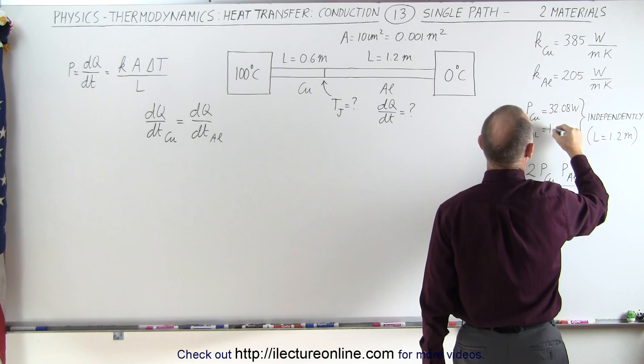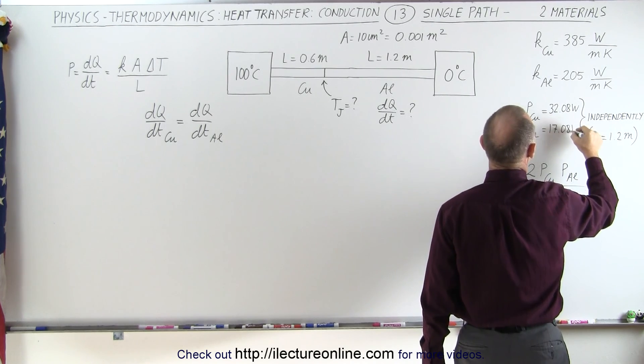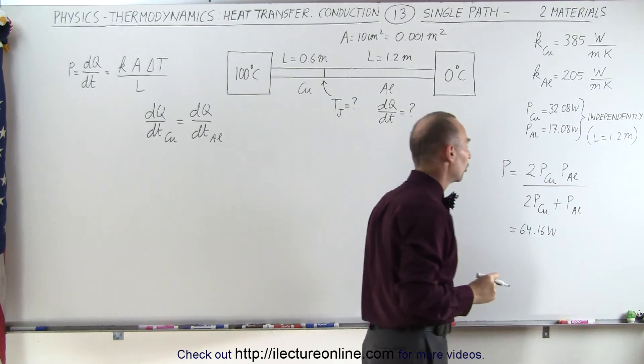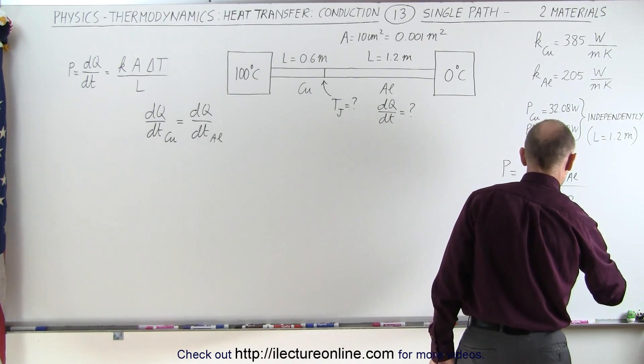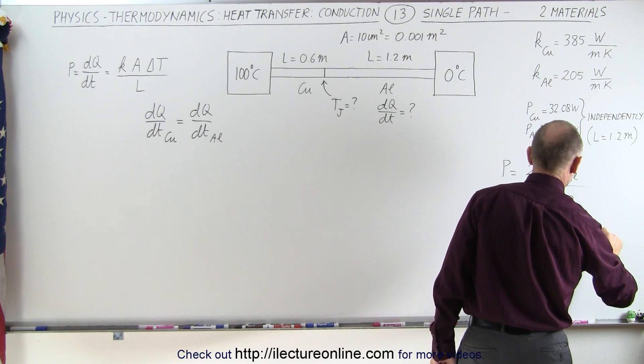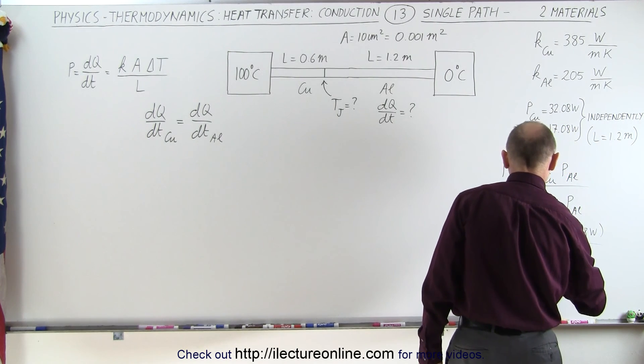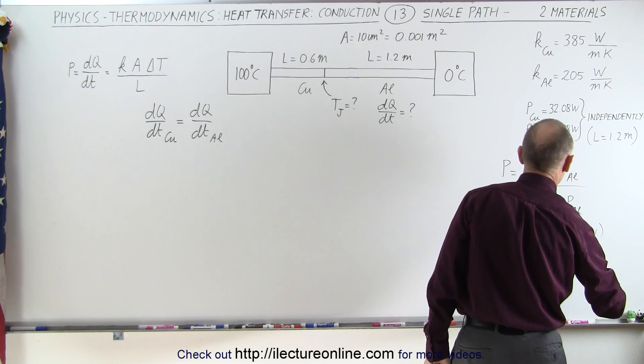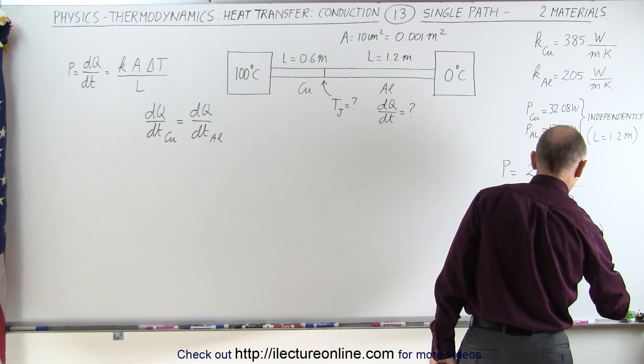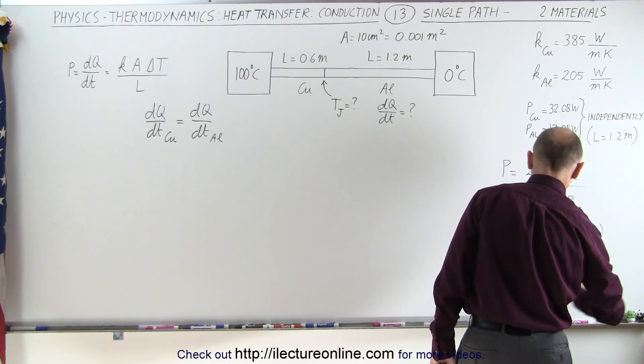And we use 17.08 watts, that's the two decimal places, for the aluminum section. So multiply this, we have 17.8 watts divided by twice that, that would be 64.16 watts plus 17.08 watts, and that will give us the heat transferred through this combination.